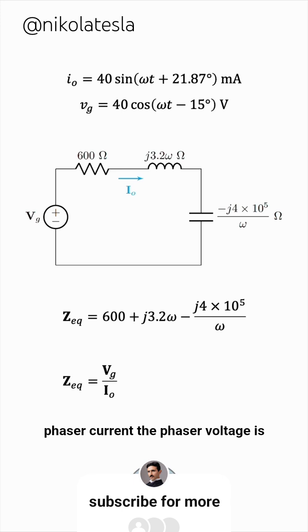The phasor voltage is simply 40, phase negative 15 degrees, as given, but the current is given in a sine, and the reference phasor is usually a cosine. So, we'll have to subtract 90 degrees from the phase, leading to negative 68.13 degrees.